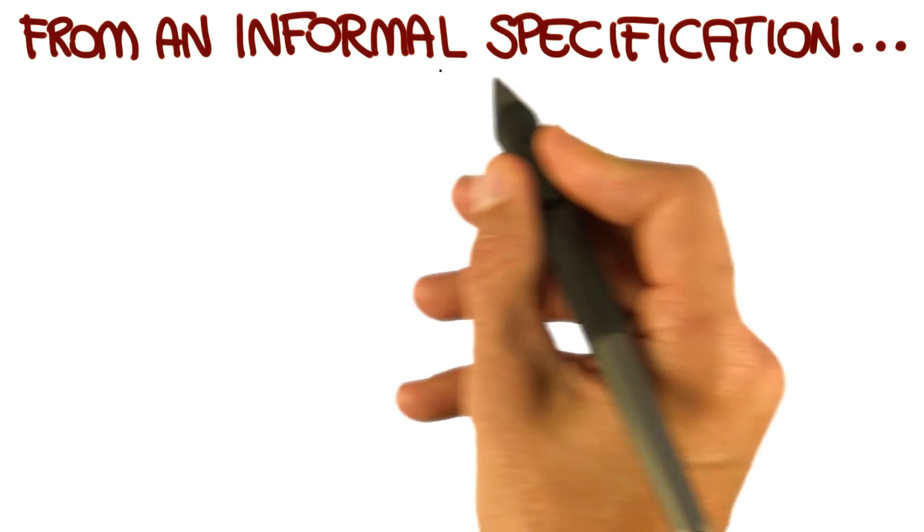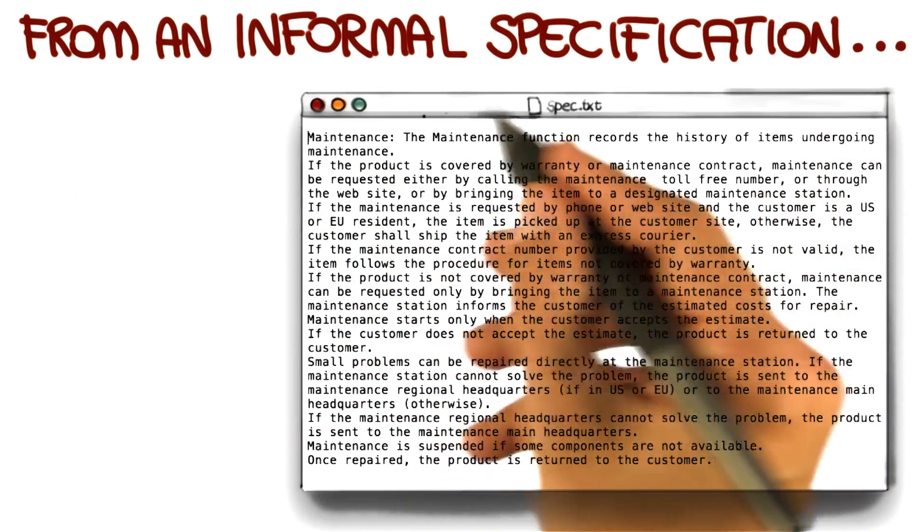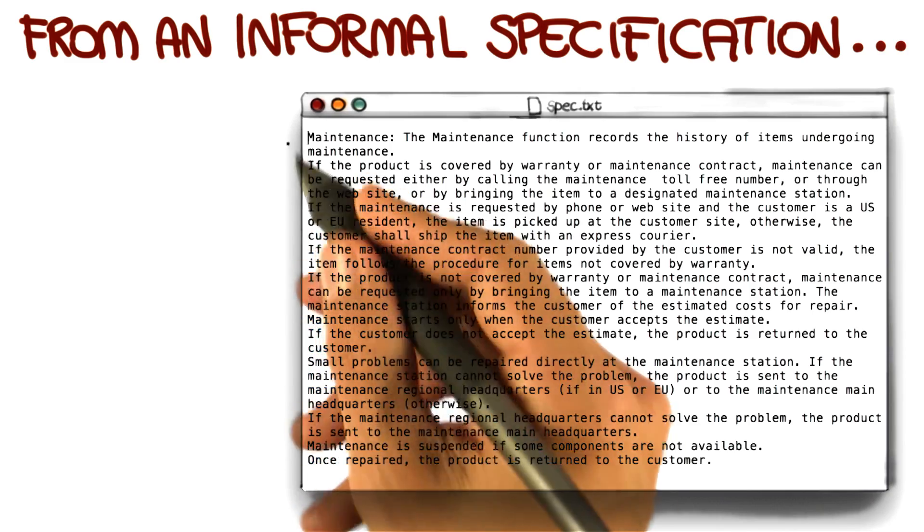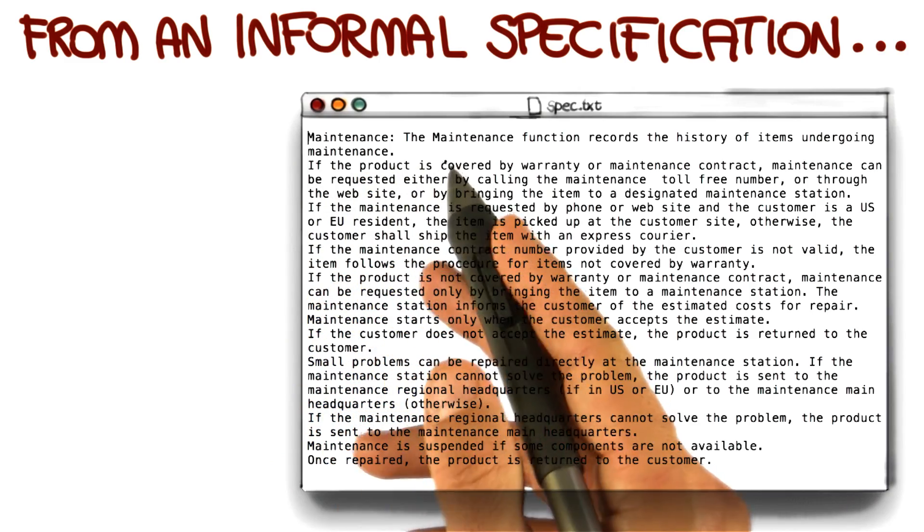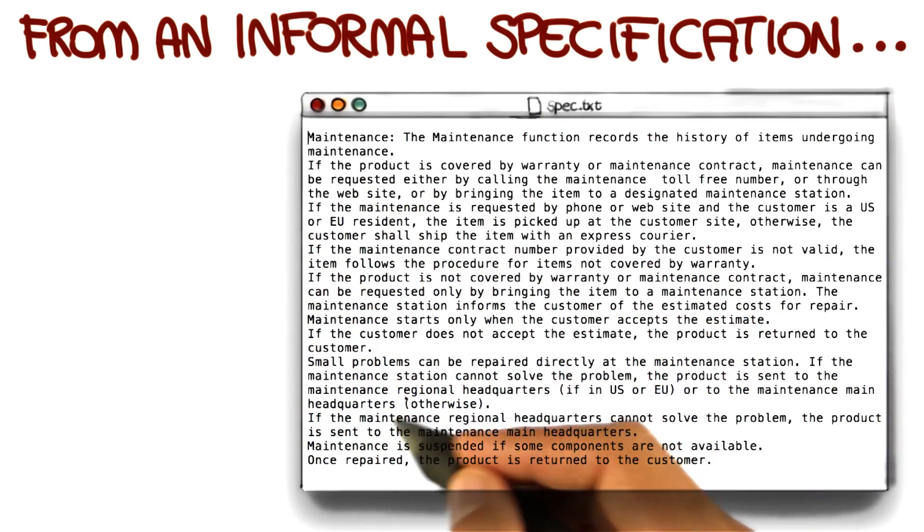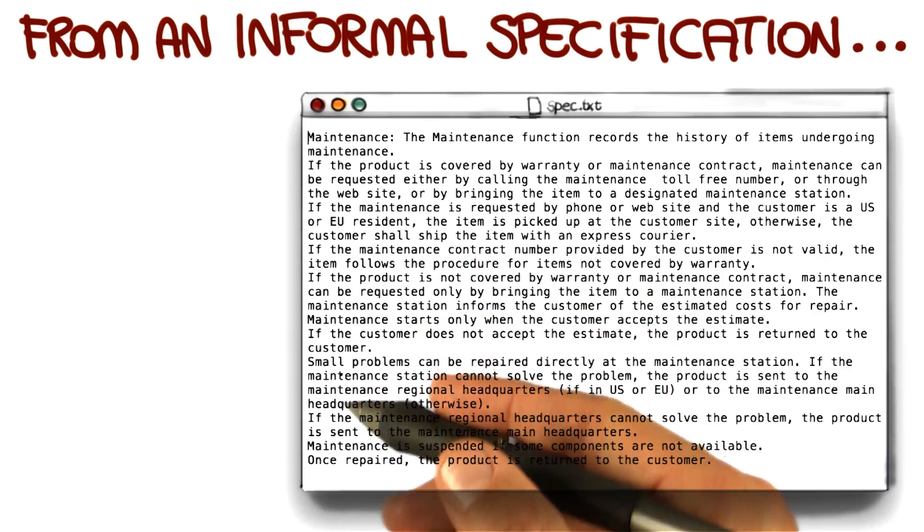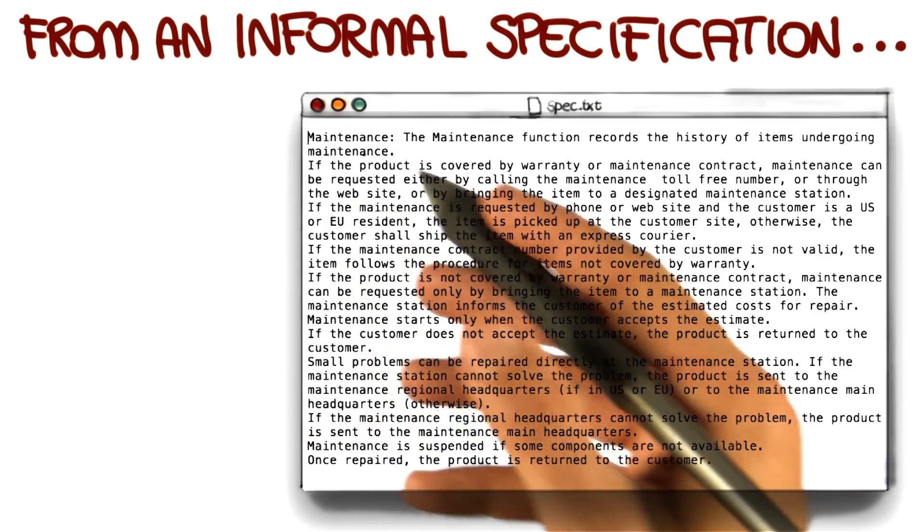In this example, we're going to start from an informal specification. The specification is the one shown here in filespec.txt. This is the specification for the maintenance function in a specific system. What we're doing is taking the description of the functionality of the system and building a model.